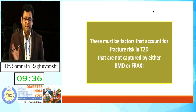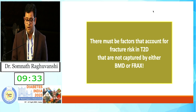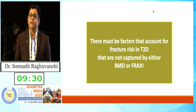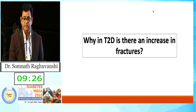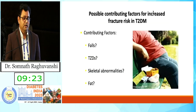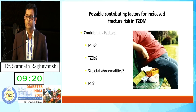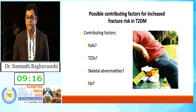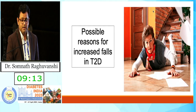There must be some factors that contribute to fracture not captured by BMD or FRAX score. Why is there increased fracture risk in type 2 diabetes? Perhaps certain factors are involved: increased tendency to fall, use of thiazolidinediones, abnormalities related to obesity or fat, and possibly marrow fat. Let's discuss each.